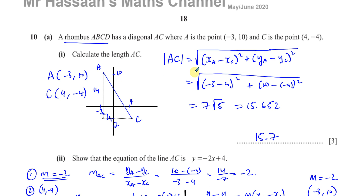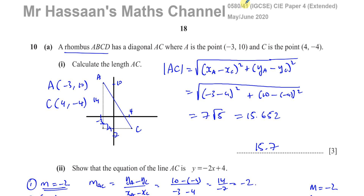I'll put a link to part B at the end of this video, as well as a link to the rest of paper 4 variant 1 from May-June 2020, a link to the topic of straight line graphs, and a link to special quadrilaterals and geometry. Thank you for watching, I hope everything was clear, and see you soon.